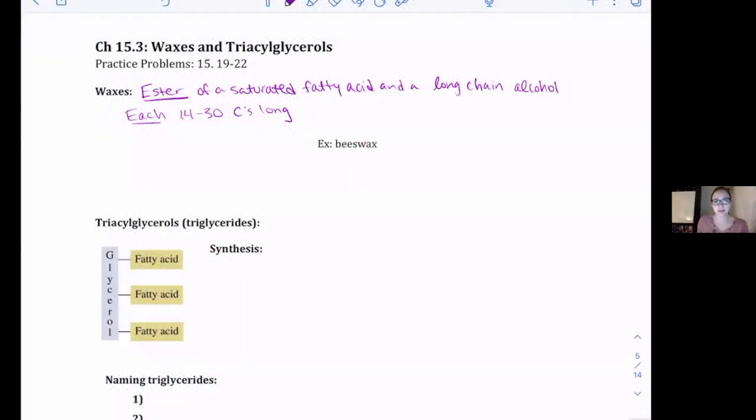Okay, so our third section is talking about waxes and triacylglycerols. These are the first forms of esters that we find in our bodies based off of our fatty acids.